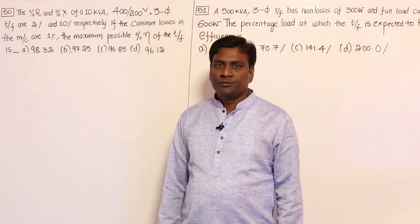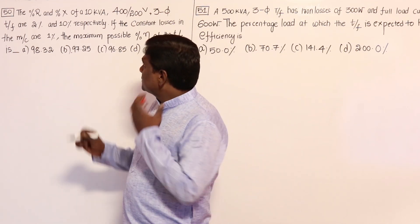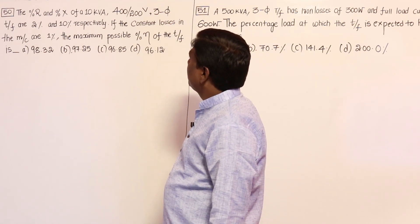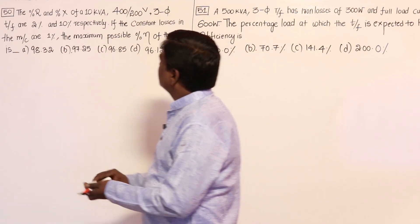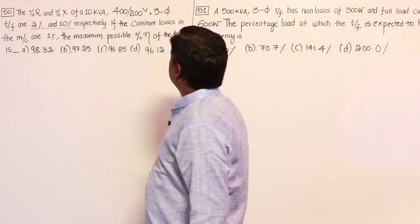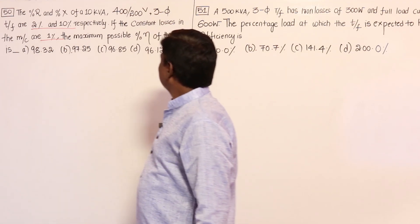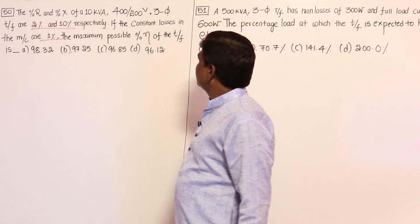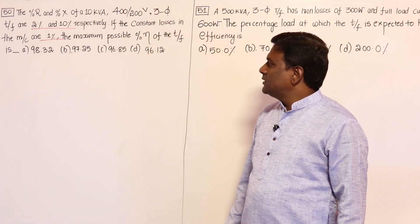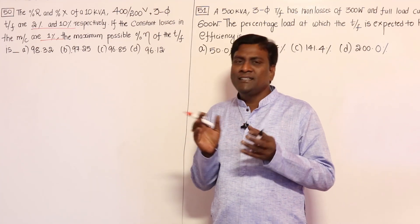Let us solve three more questions on efficiency. In the first question, percentage resistance and percentage reactance of a transformer are two and ten percent, and the constant loss in the machine is one percent. We need to find the maximum possible efficiency of the transformer. I will solve this question in a single step, and then explain.